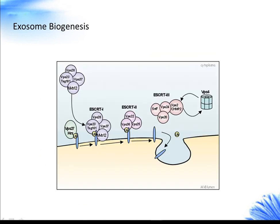Exosomes are generally considered as an intermediate compartment between the plasma membrane, where endocytosis takes place, and lysosomes, where degradation occurs.